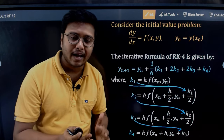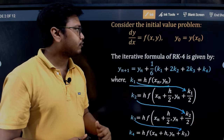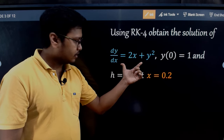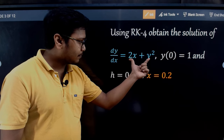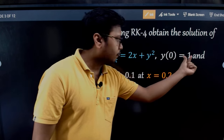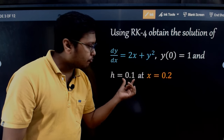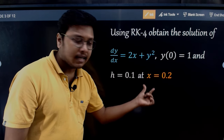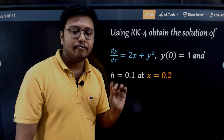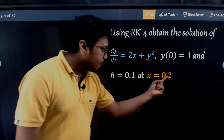Let's look at a problem. We are going to solve the differential equation dy/dx = 2x + y², given that when x = 0, y = 1, and the step length h = 0.1. We need to find the value of y when x = 0.2. We have to do two iterations for this.